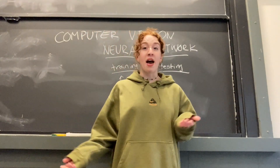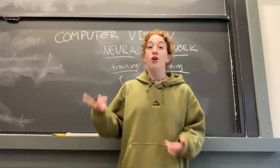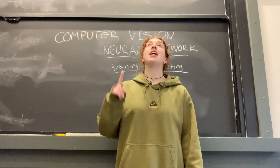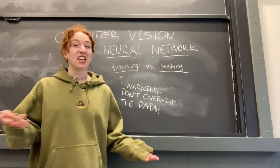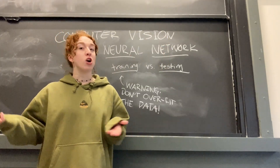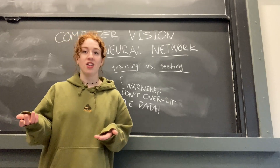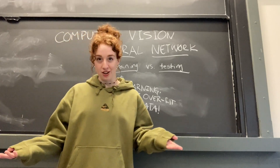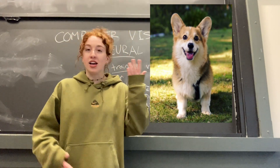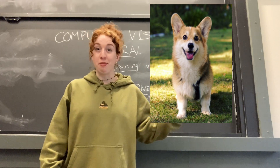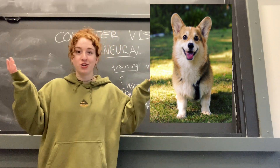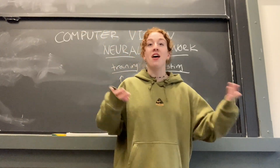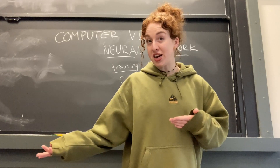We can combat overfitting in a few ways. First, you have to make sure to have a lot of training data. And secondly, we can structure our neural network in such a way that it only remembers key details of a corgi, such as eyes, nose, mouth, and ears, rather than memorizing every single pixel of every image in our training data.